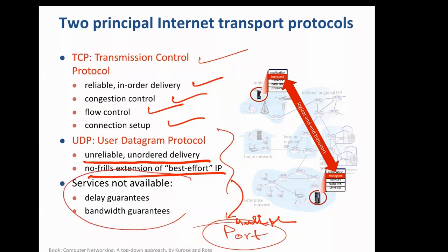Neither TCP nor UDP guarantees delay or bandwidth. No protocol says whether a packet will reach you within 10 milliseconds. It is the responsibility of the service provider to ensure packets don't take too much time — which is why streaming services like Netflix place servers close to users, for example in Bangalore. Basically, the internet is unreliable and if you want reliability between two ends, you use TCP.